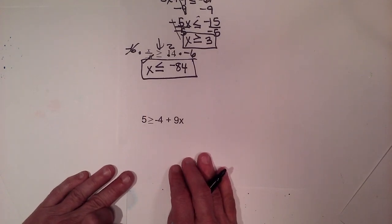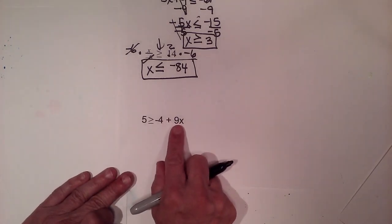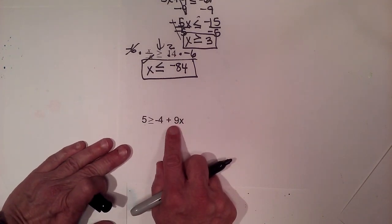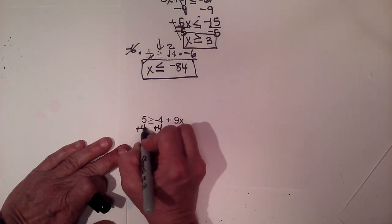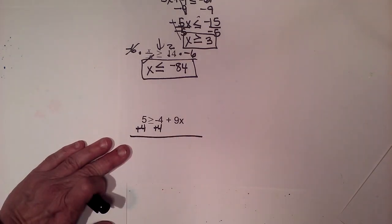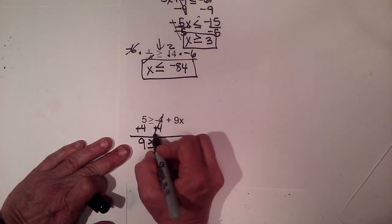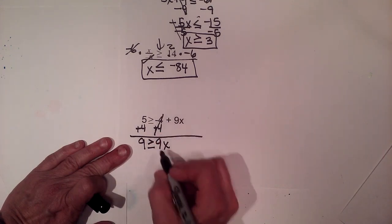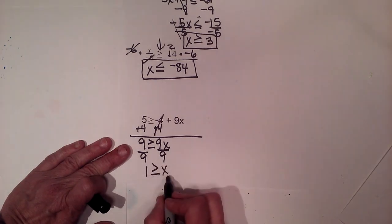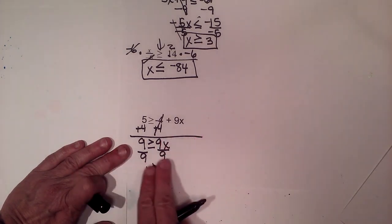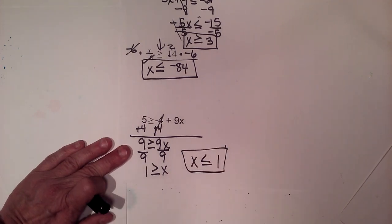Here's another two-step inequality. The coefficient in front of x is positive, so we will not have to flip the inequality. Add four to move it to the other side — since we're adding, not multiplying or dividing, we don't flip. Bring down nine x and the greater than or equal to sign. The fours cancel. Divide by nine: one is greater than or equal to x. If you prefer x on the left, flip the order and the inequality also flips, giving x is less than or equal to one.